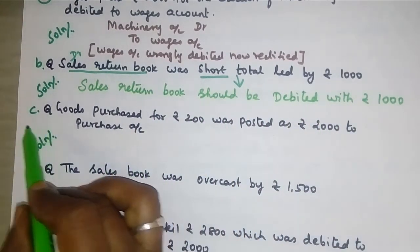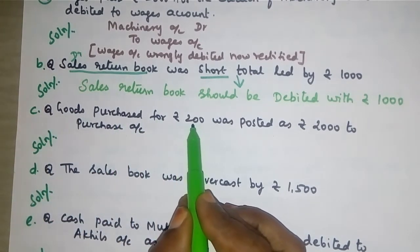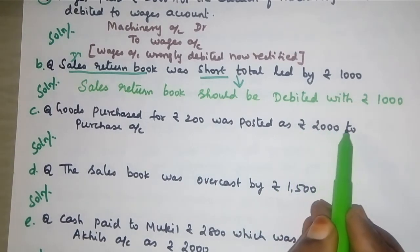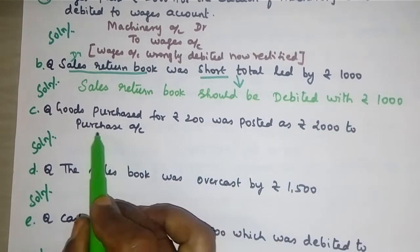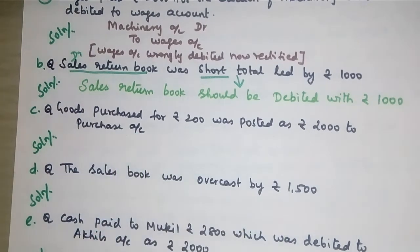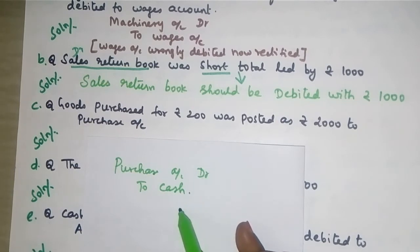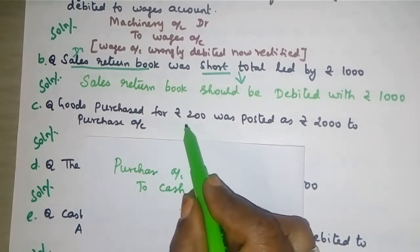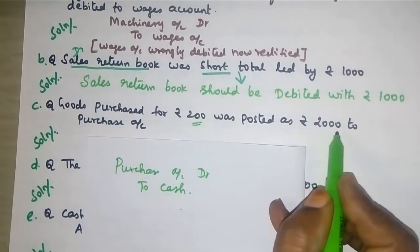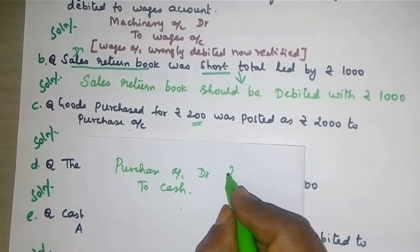The same rule applies here - it is short debit, that is why we are going to debit the sales written book. Sales written book should be debited with rupees 1000. It is a one-account effect, so we have written it as a statement. Now coming to transaction C: goods purchased for rupees 200 was posted as rupees 2000 to the purchase account. The journal entry is: purchase account debit to cash. It was actually purchased for 200.